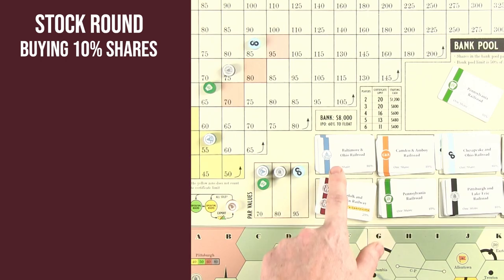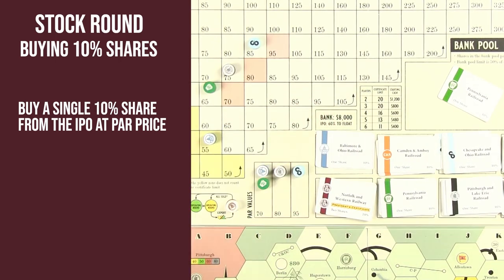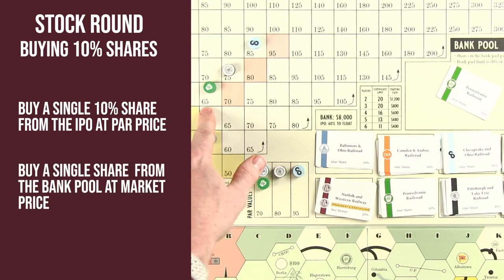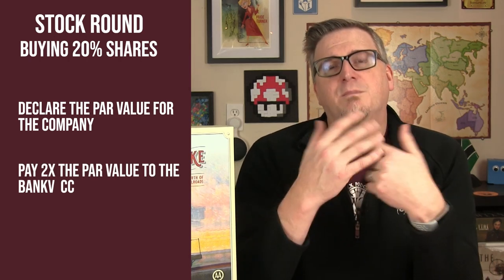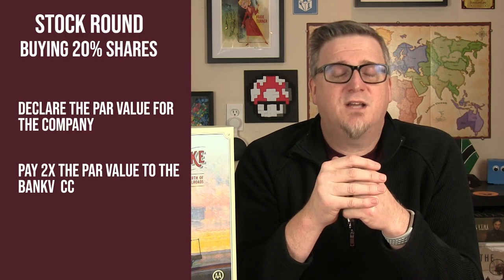If there are any 10% shares available and the presidency has been purchased, the player may buy the 10% share. Simply look up the par value for that share, pay that amount to the bank, and take the share. If you wish to purchase a share from the bank pool, those are sold at the price indicated on the stock market — pay that amount to the bank and take the certificate. If the president's share is available, you may buy the 20% president's share. When you do, you must declare the par value for the share itself, which determines how much each share will cost. The player purchasing the president's share pays double the amount they parred the certificate at, since the certificate counts as two shares.